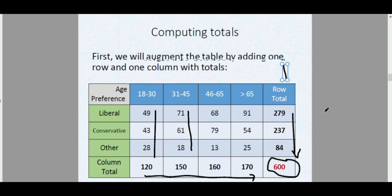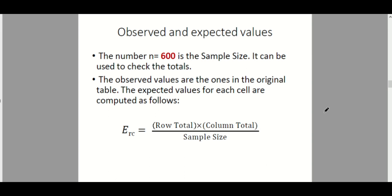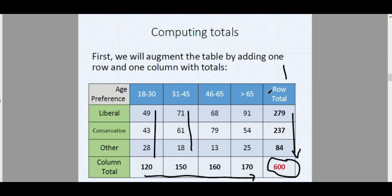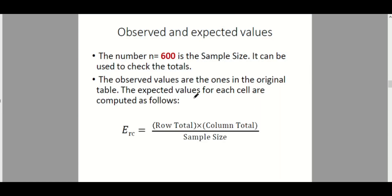The first part is to complete the contingency table by adding row totals and column totals. Note that n, the sample size, is 600. The observed values are those in the original table — the values 49, 43, 28, 71, 61, and so on. The expected values for each cell are computed using the formula: E_rc = (row total × column total) / n, where r is the row and c is the column, divided by the sample size 600.